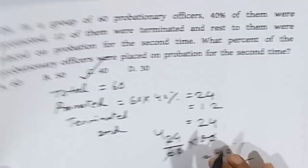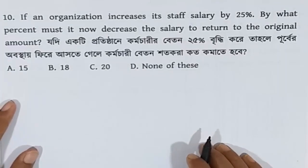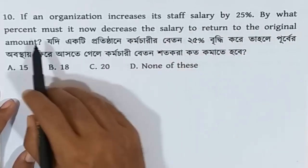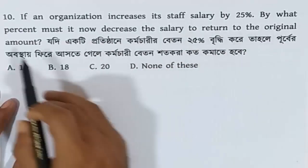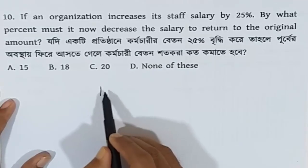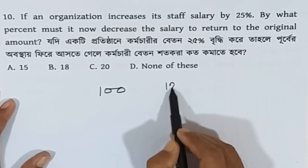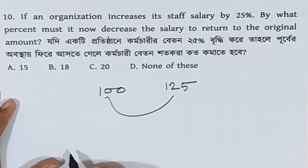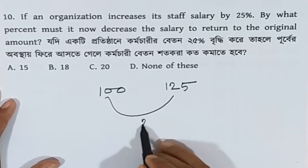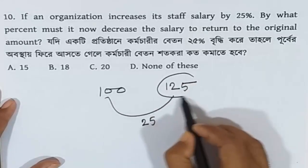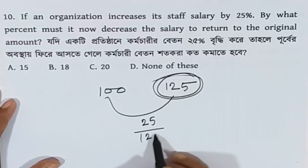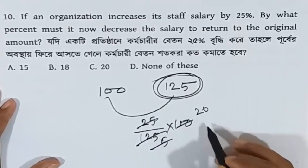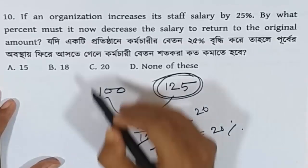Question 10. If an organization increases its staff salary by 25%, by what percent must it now decrease the salary to return to the original amount? After a 25% increase the salary becomes 125. To return to the original, the decrease needed is 20%. The answer is 20%, which is correct.